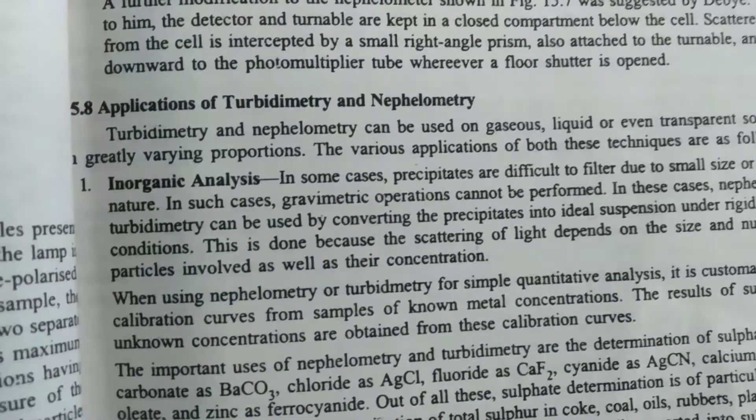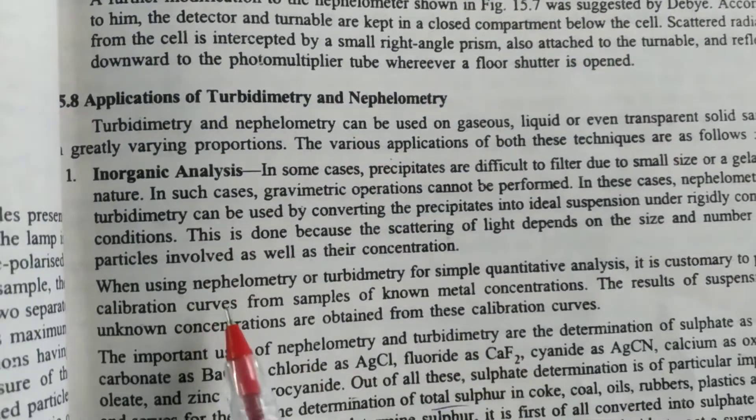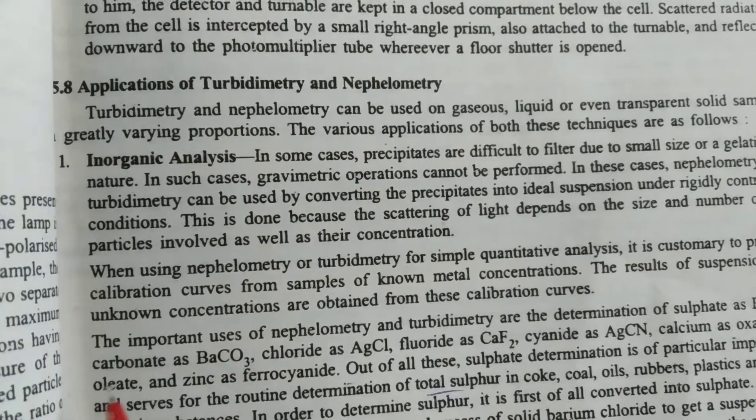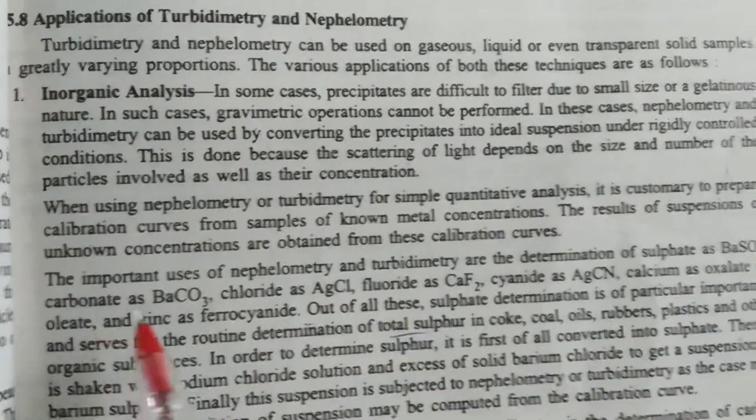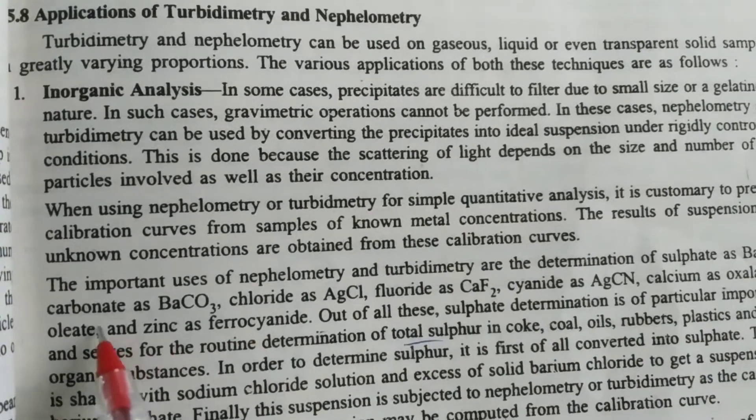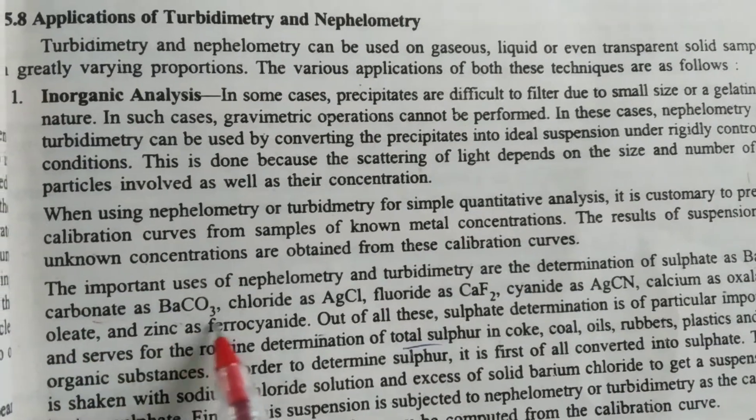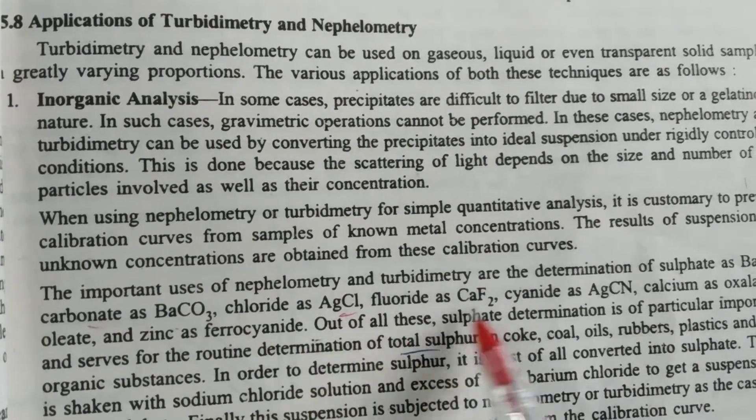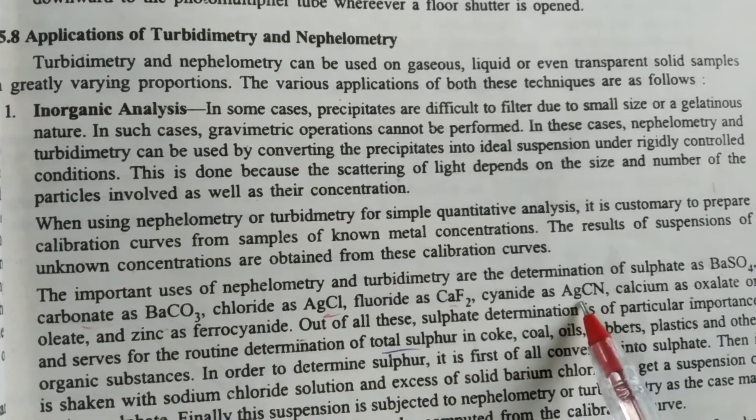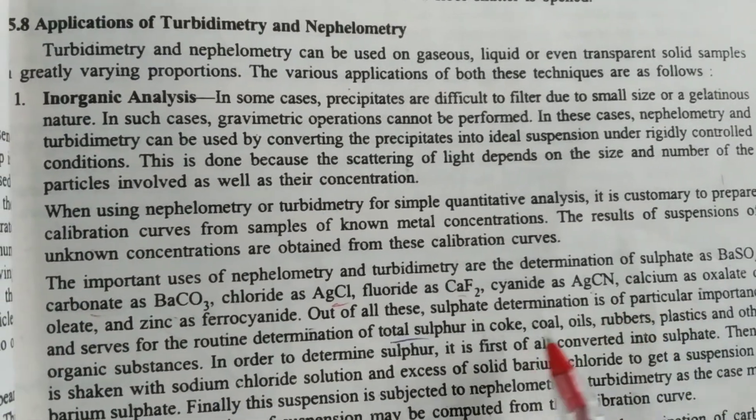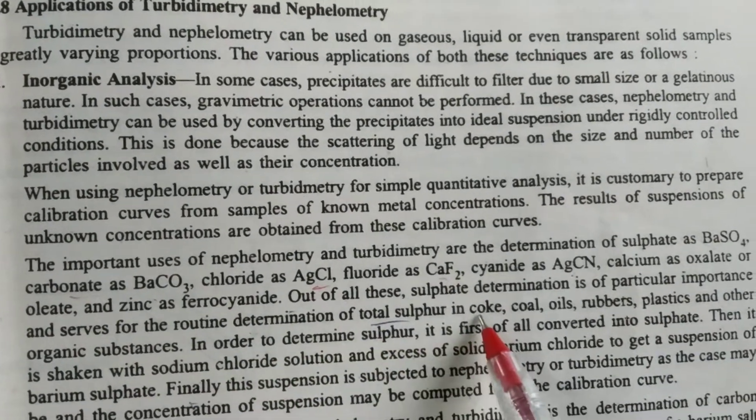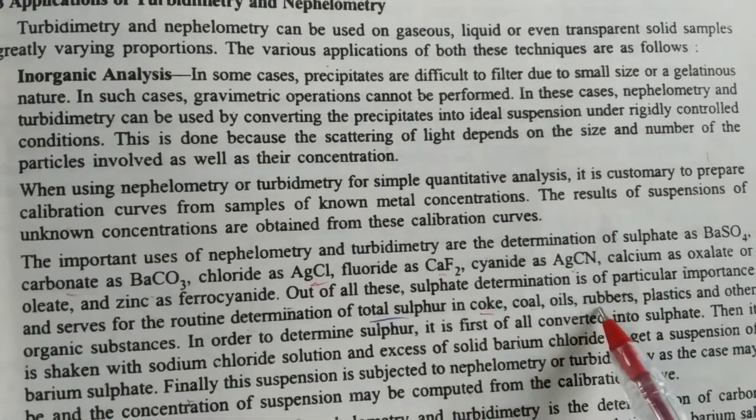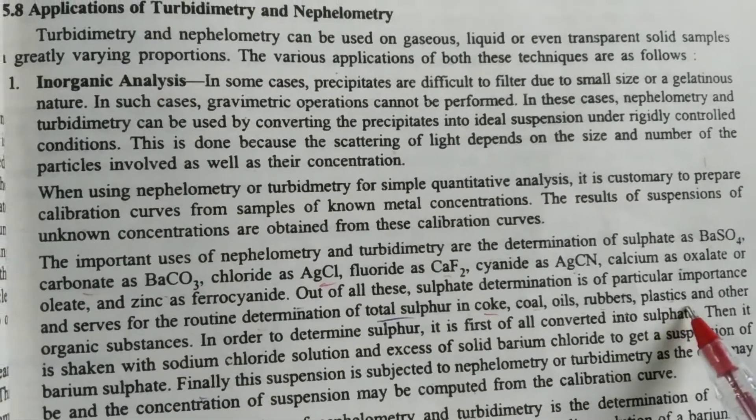Turbidimetry is mainly useful for inorganic analysis: determination of sulfate as BaSO4, carbonates as BaCO3, chloride as AgCl, fluoride as CaF2, and cyanide as AgCN. We also determine total sulfur in coke, coal, oil, rubber, and plastics.